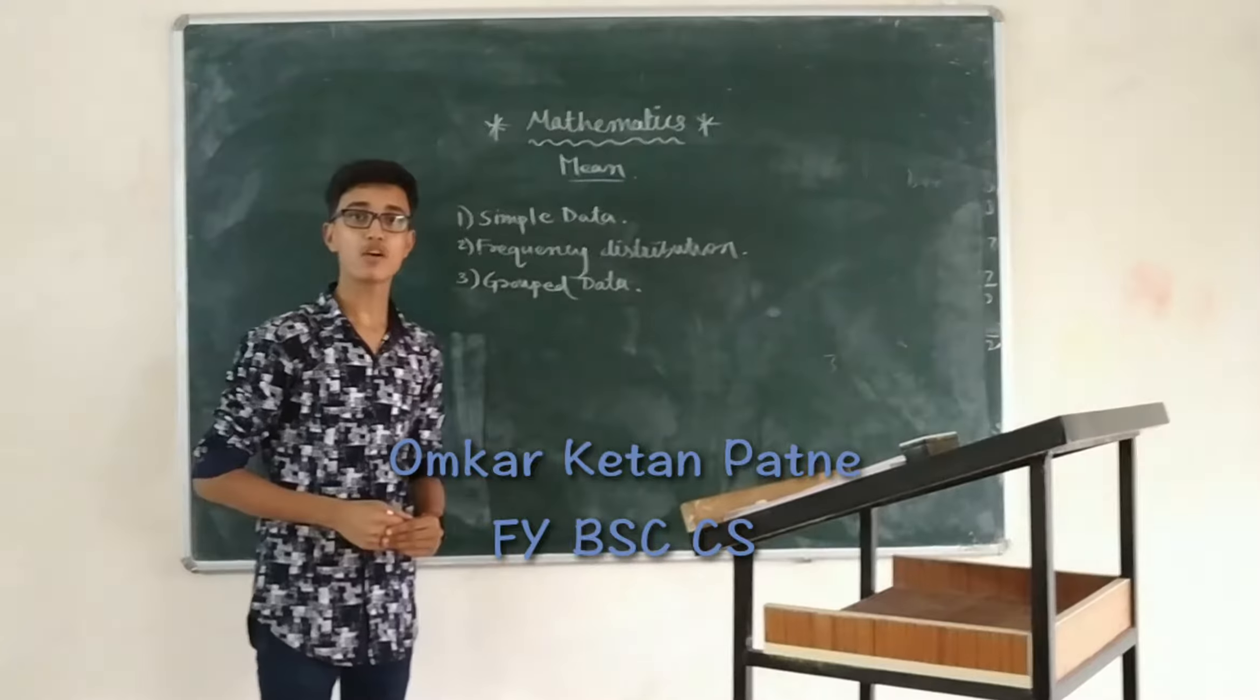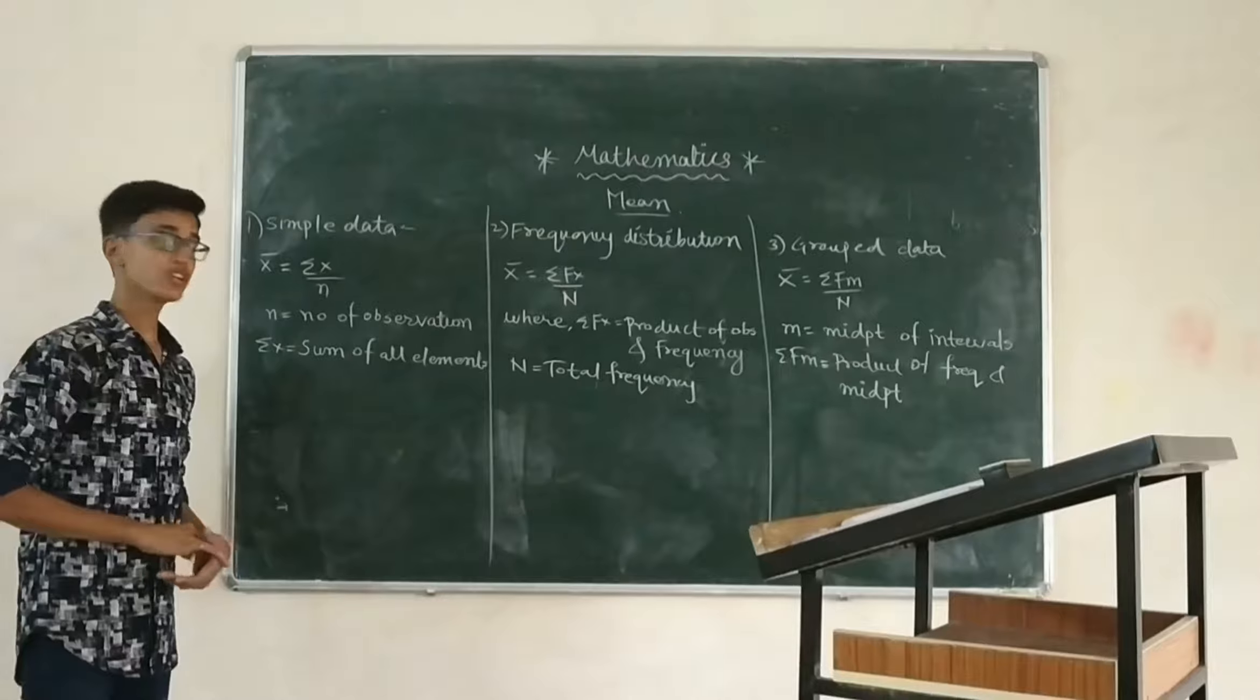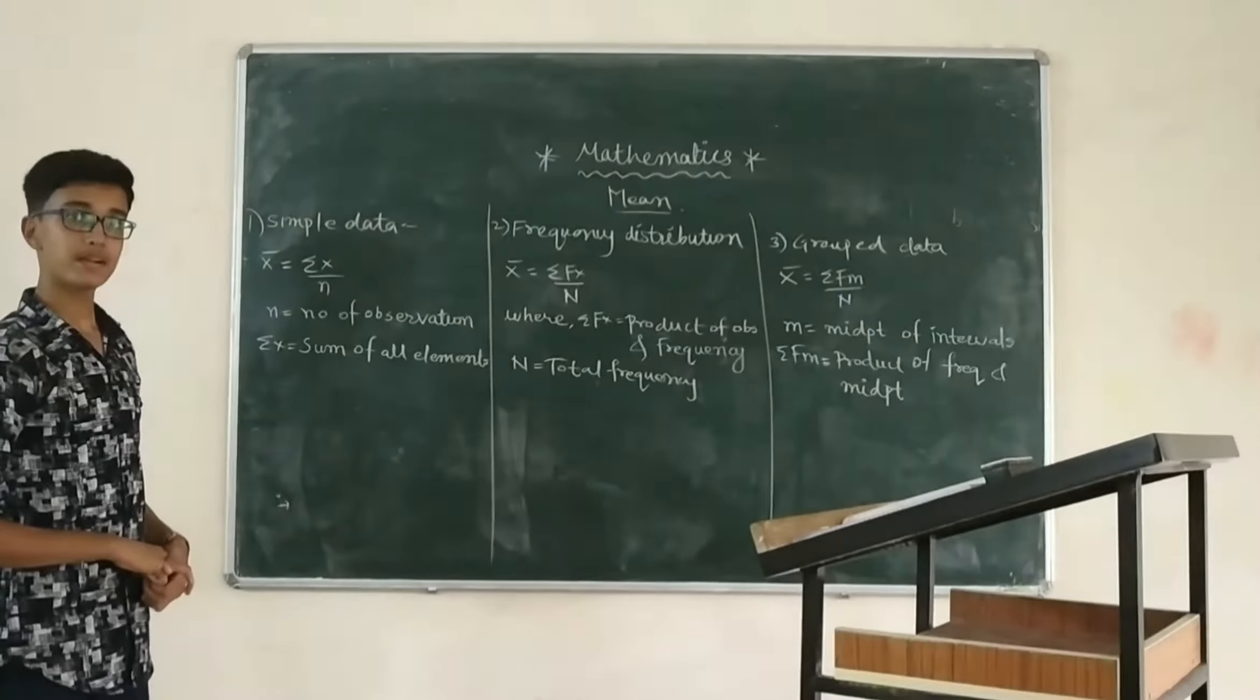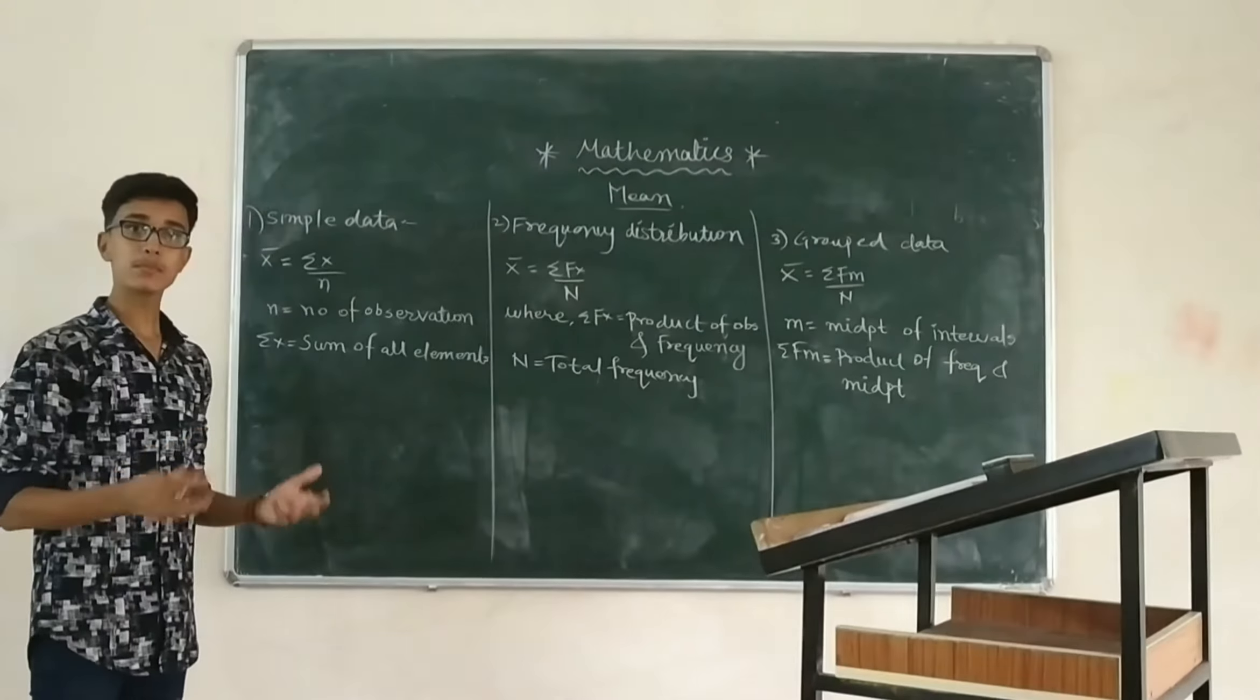So coming to the simple data, its formula is mean x bar is equal to sigma x upon n, where summation x is equal to sum of all elements and n is the total number of observations.